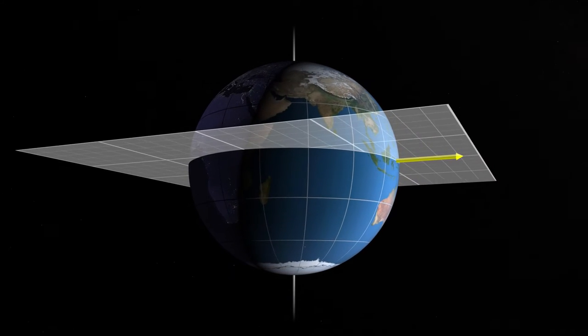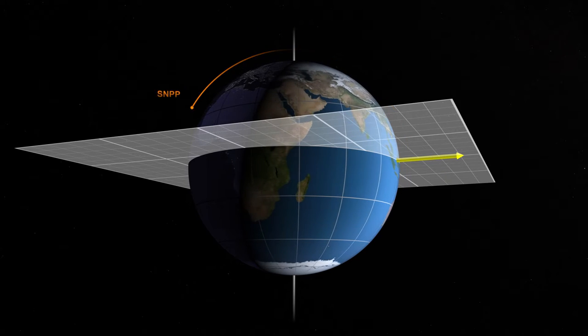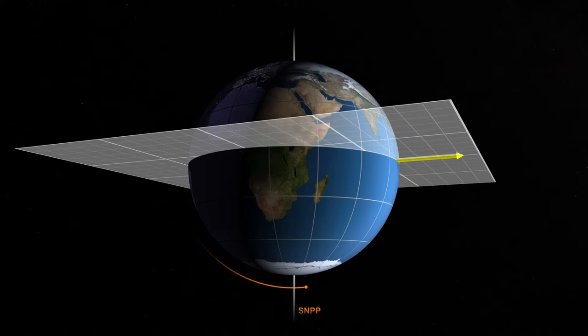The SUOMI National Polar Orbiting Partnership Mission, or SNPP, is the first satellite in the JPSS constellation.